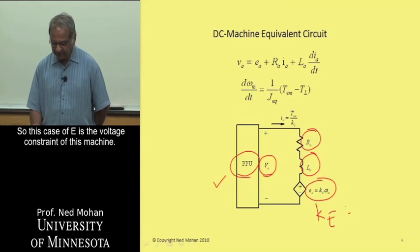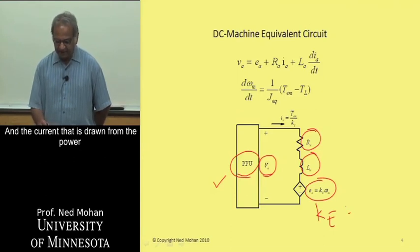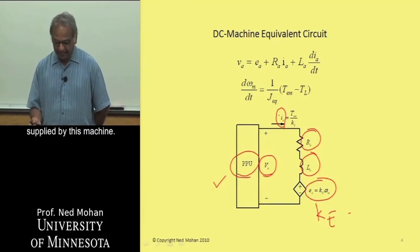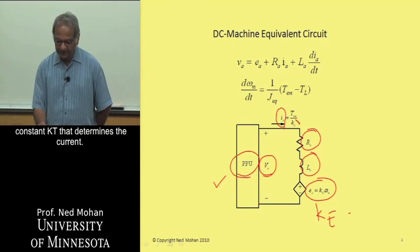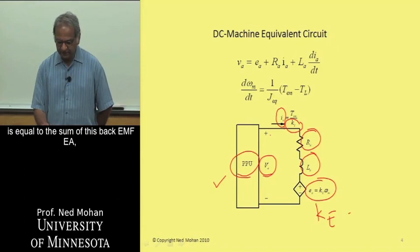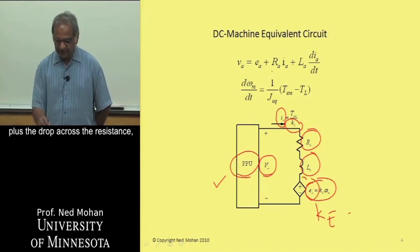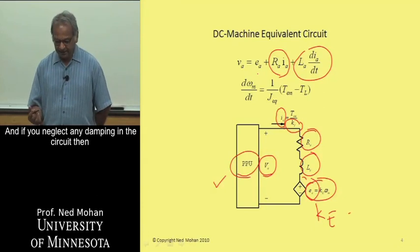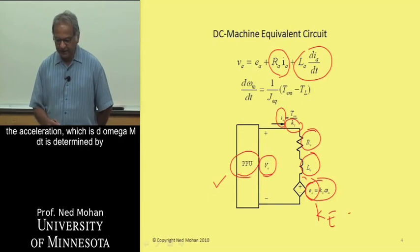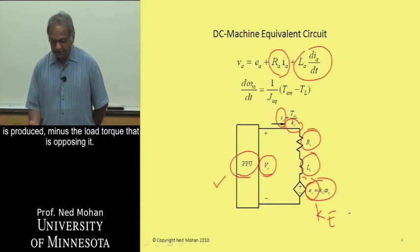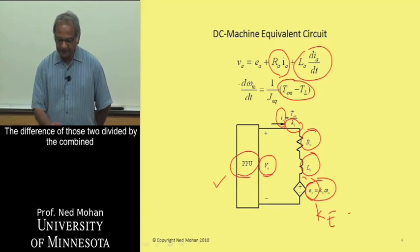So this KE is the voltage constant of this machine. And the current that is drawn from the power processing unit or fed into it, this IA depends upon how much torque is being supplied by this machine. And so this electromagnetic torque divided by the torque constant KT, that determines the current. And you can see that in this circuit, the voltage equation is equal to the sum of this back EMF EA, plus the drop across the resistance, plus the drop across the inductance here.